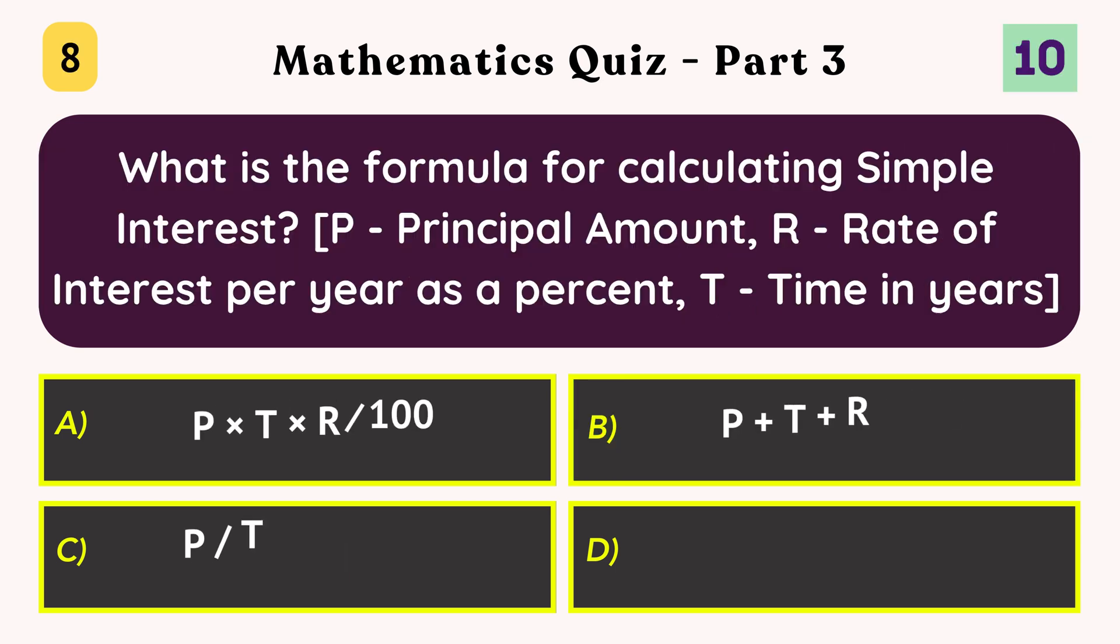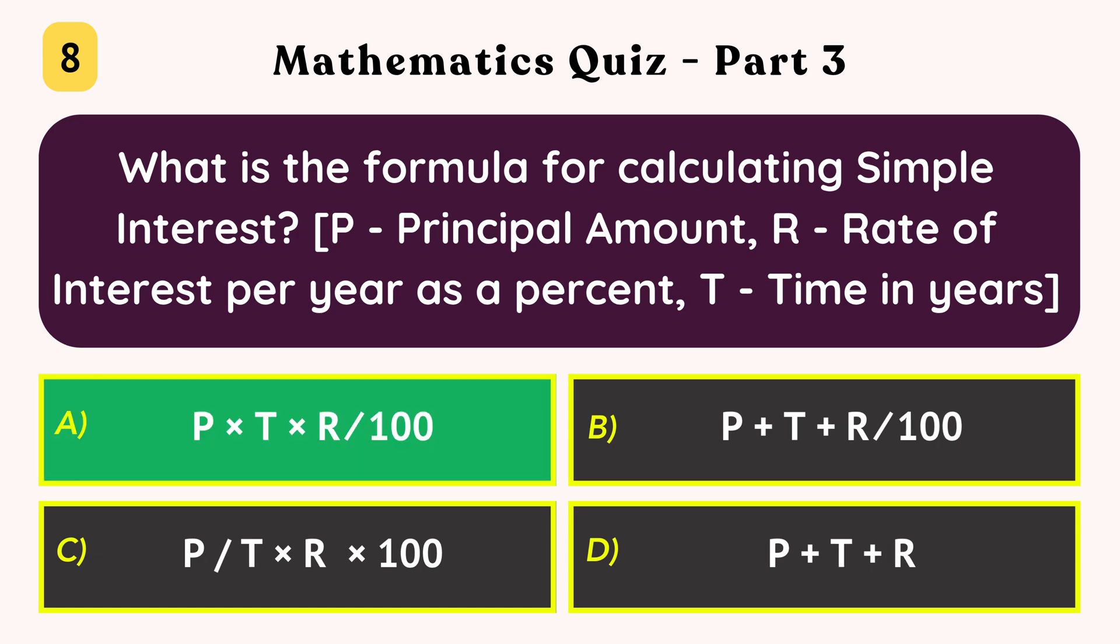What is the formula for calculating simple interest? P times T times R over 100.